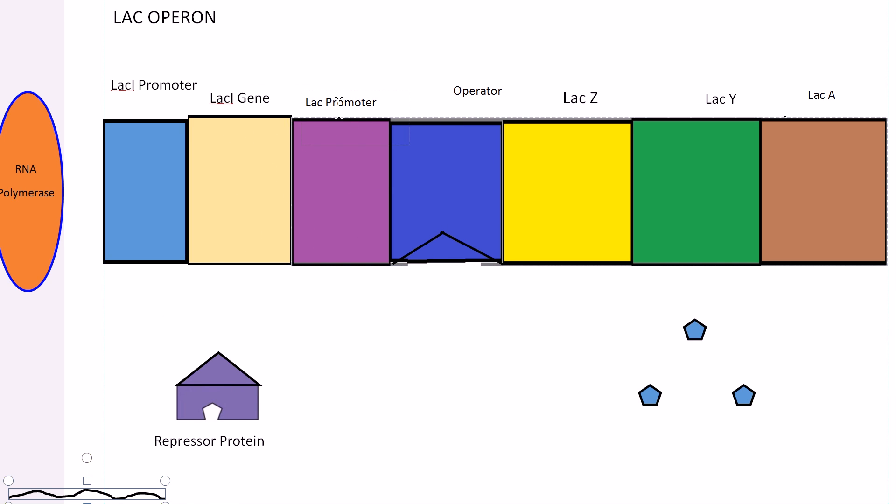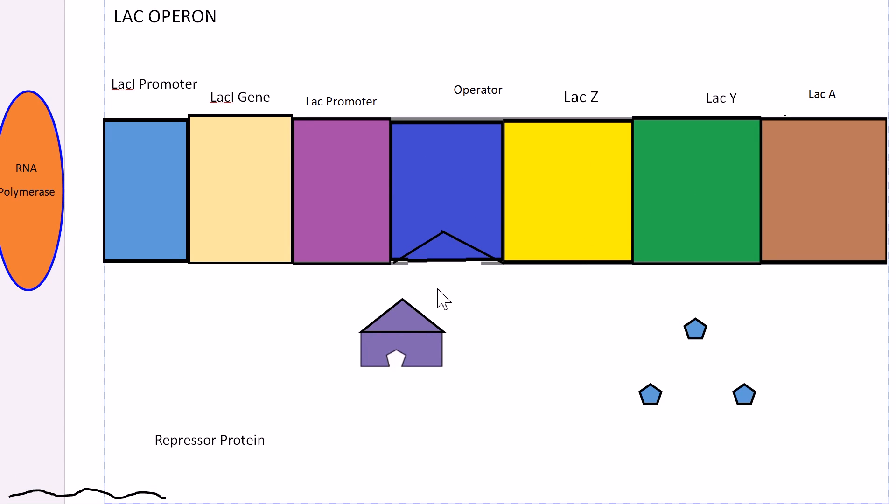In the operon we have the lac promoter and the operator. The operator you can think of as a switch which turns the operon on and off. In the absence of lactose, the lac repressor is active, meaning it binds to the operator right here. You can think of this as the off position.